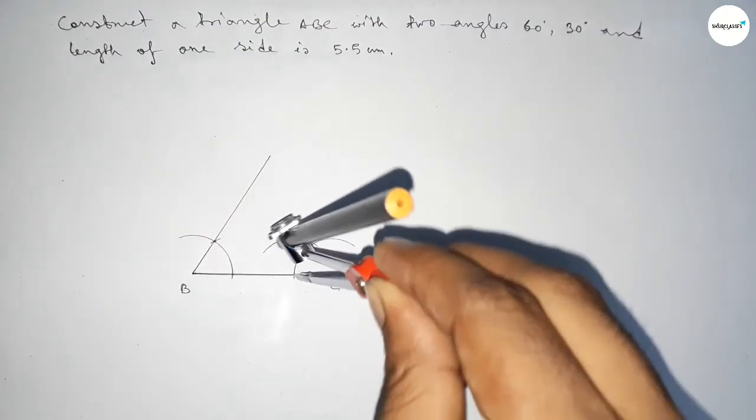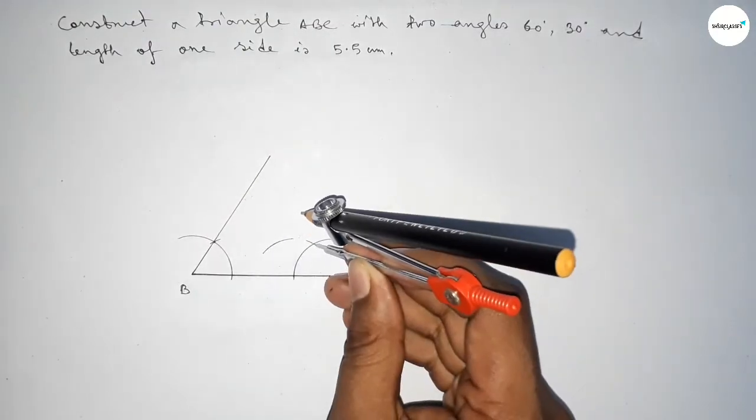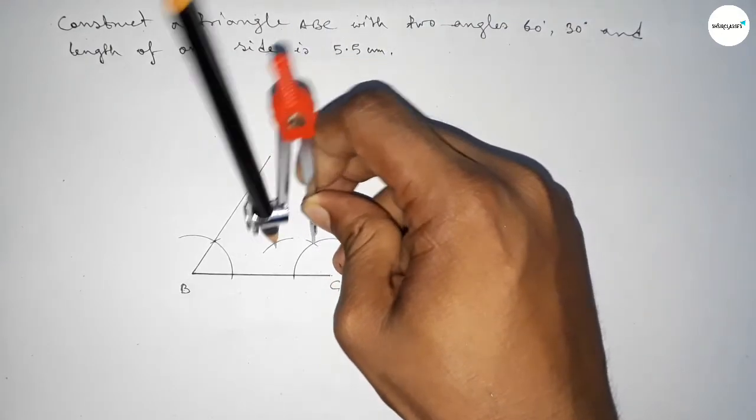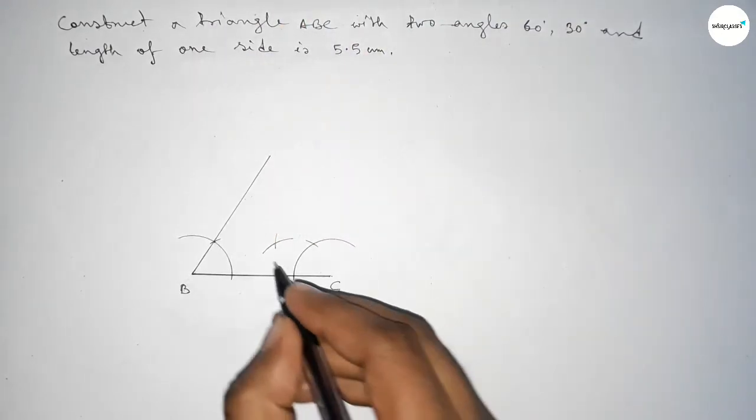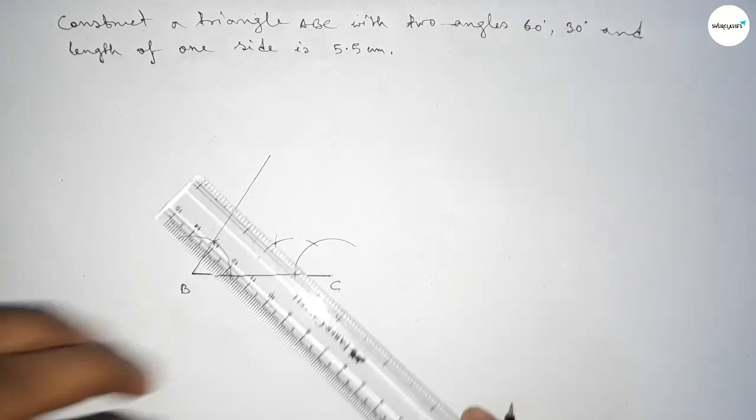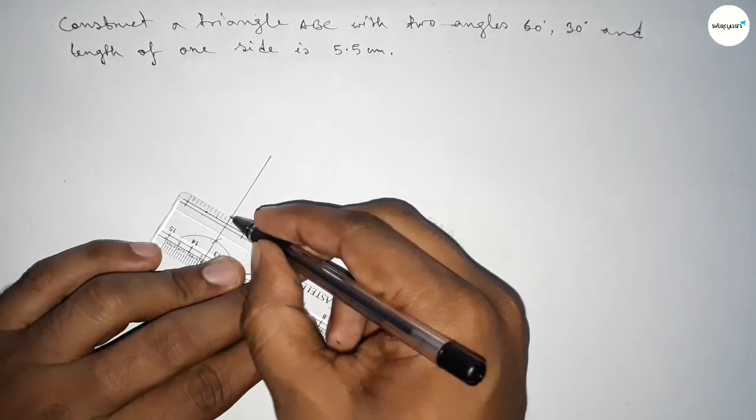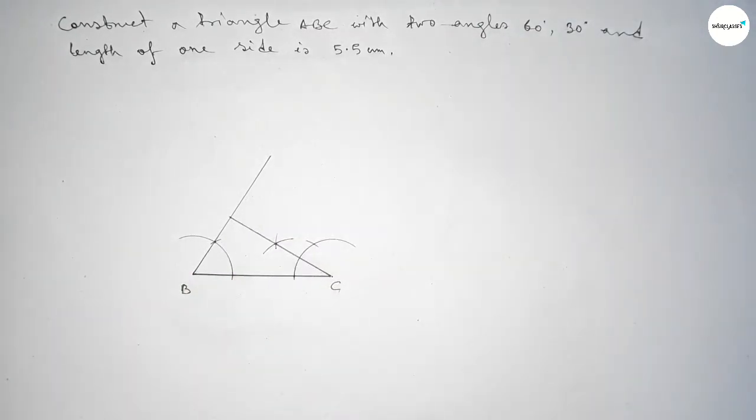Putting the compass here and cut here so both curves intersect at a point. Now joining this line to get here a 30 degree and both lines intersect at point A.